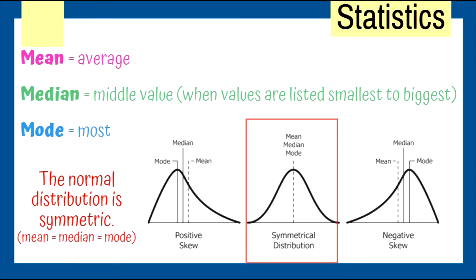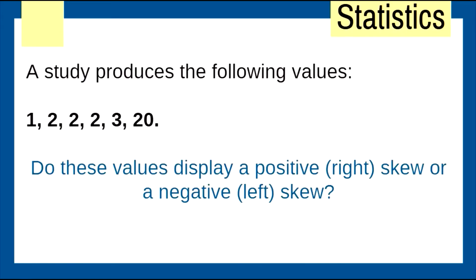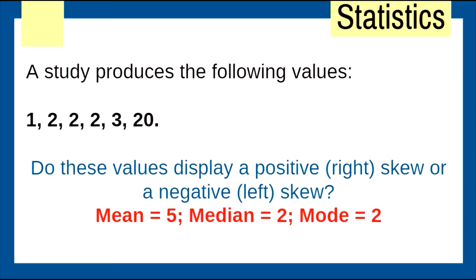The normal distribution is symmetric, where mean equals median equals mode. A study produces values: 1, 2, 2, 2, 3, 20. Positive or negative skew? The median and mode are both 2, but the average will be much bigger because of the outlier — 20. Therefore this displays a positive skew, like a low-class town where one billionaire family pulls the distribution to the right.